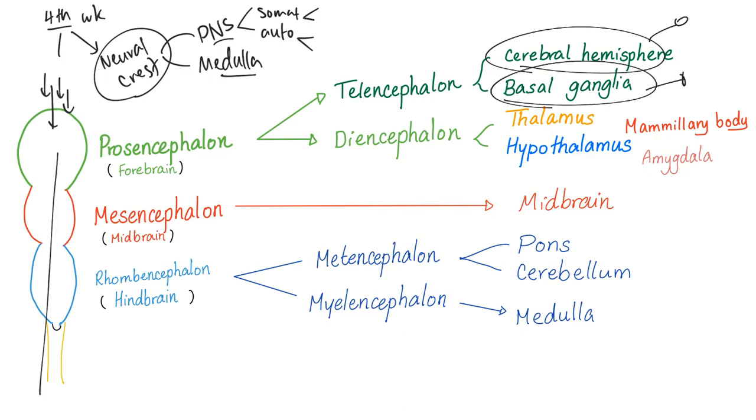Basal ganglia, purely motor. When you get damage here, such as in Parkinson's disease, or in Huntington's disease, or in hemiballismus, you get motor problems, not sensory problems.